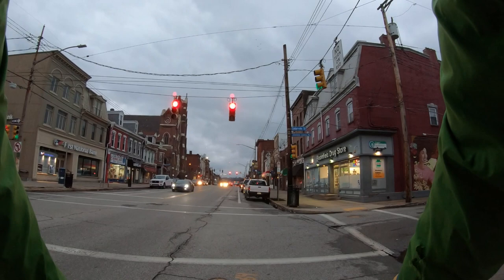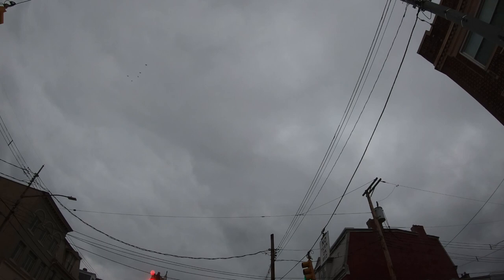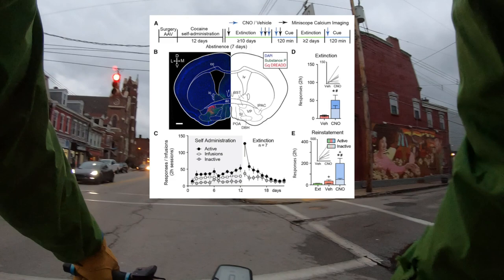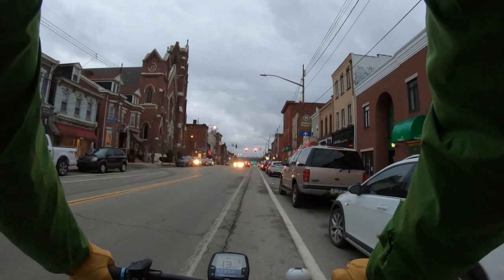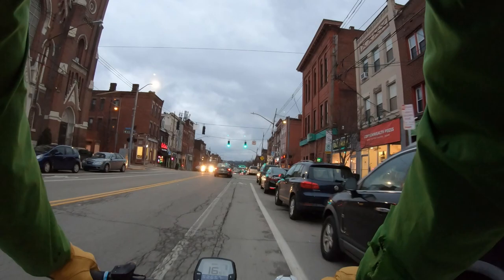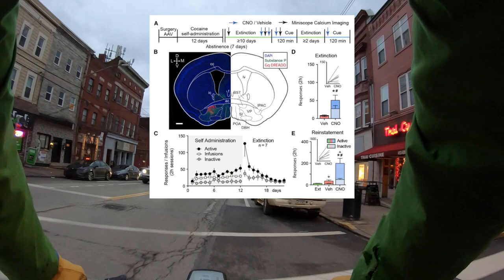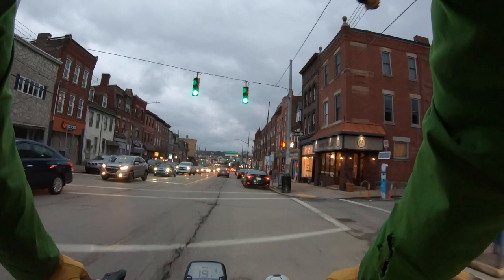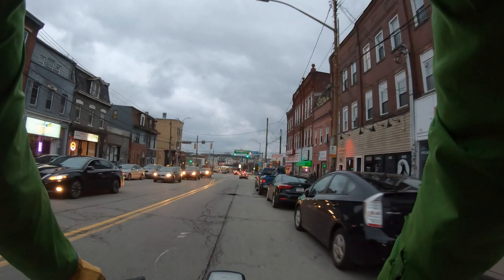What they do first, just to test this, is stimulate all the cells in the ventral pallidum and look at how extinction and reinstatement work. What they see is that if they stimulate everything, they can increase both of these things — they can create a situation where extinction doesn't work as well, so the animal remembers better and seeks more cocaine during extinction, and reinstatement happens faster upon cue presentation.